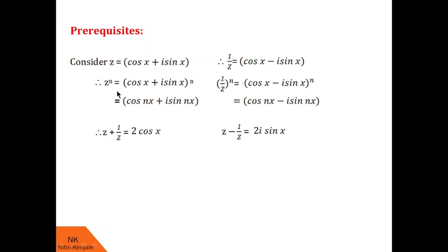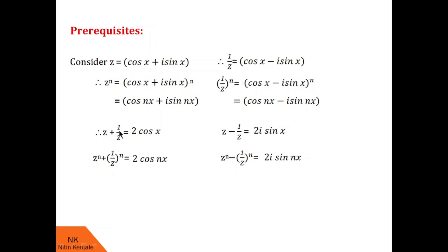Now, adding z raised to n and 1 by z raised to n gives 2 cos nx. And z raised to n minus 1 by z raised to n equals 2i sin nx. We consider these four equations as formulas for: z plus 1 by z, z minus 1 by z, z raised to n plus 1 by z raised to n, and z raised to n minus 1 by z raised to n. Now let us proceed with the method of expansion of cos raised to nx and sin raised to nx types of functions.